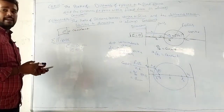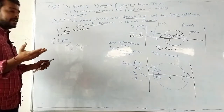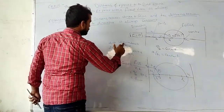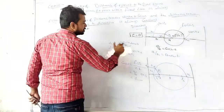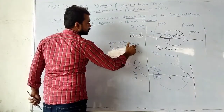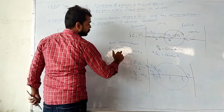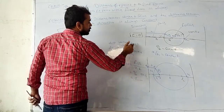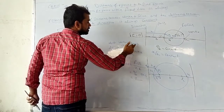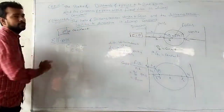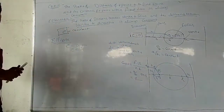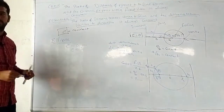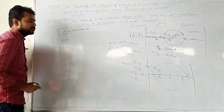To define an ellipse: the ratio of distance from vertex to focus and the distance from vertex to directrix is less than 1. Where E is less than 1. This is about ellipse.